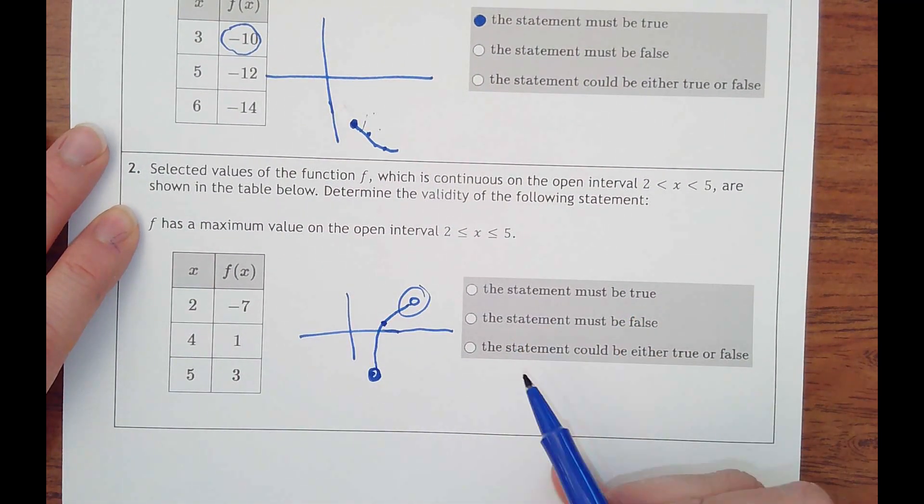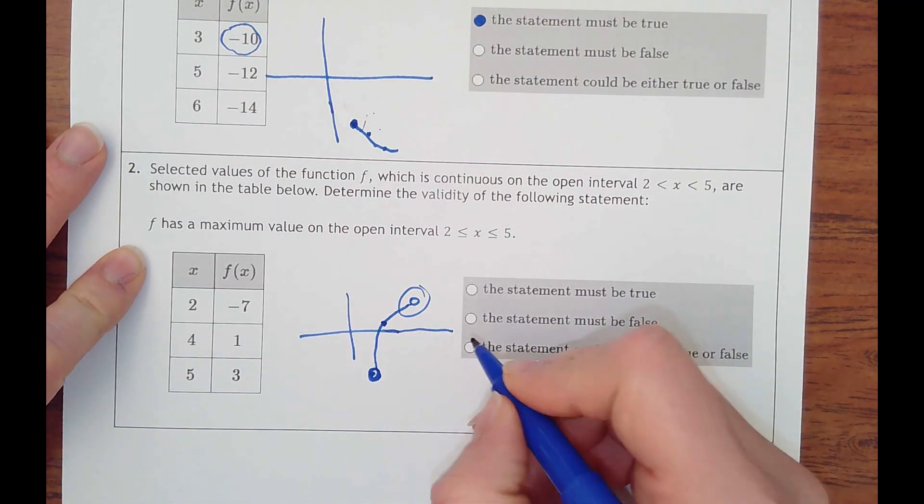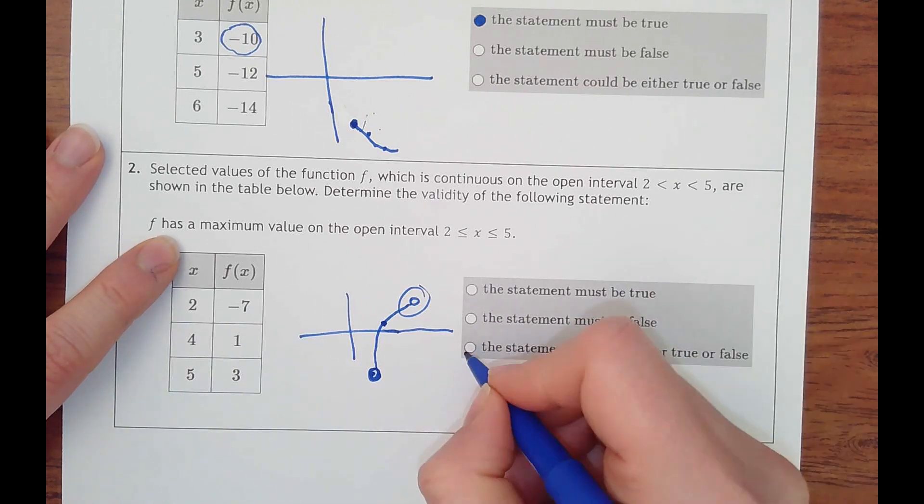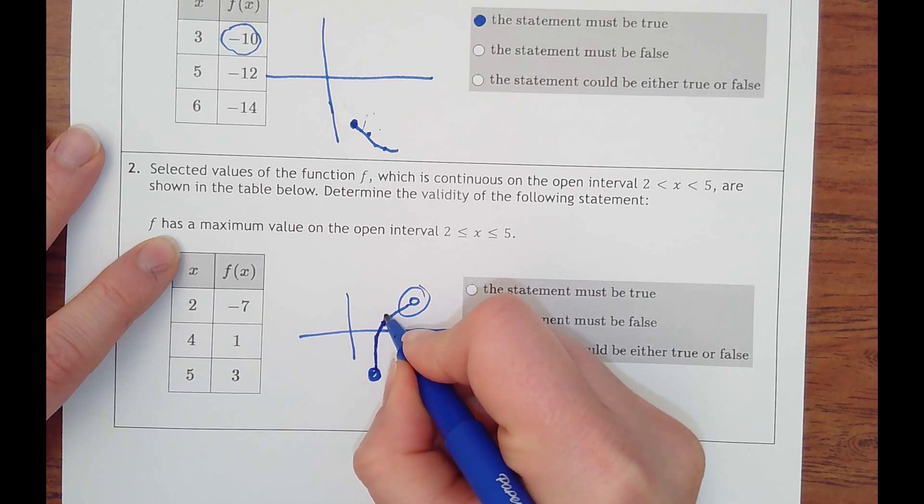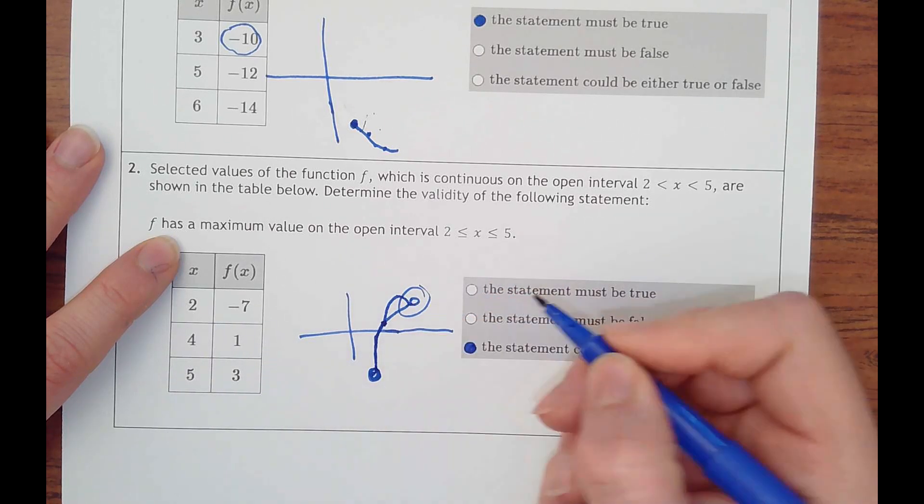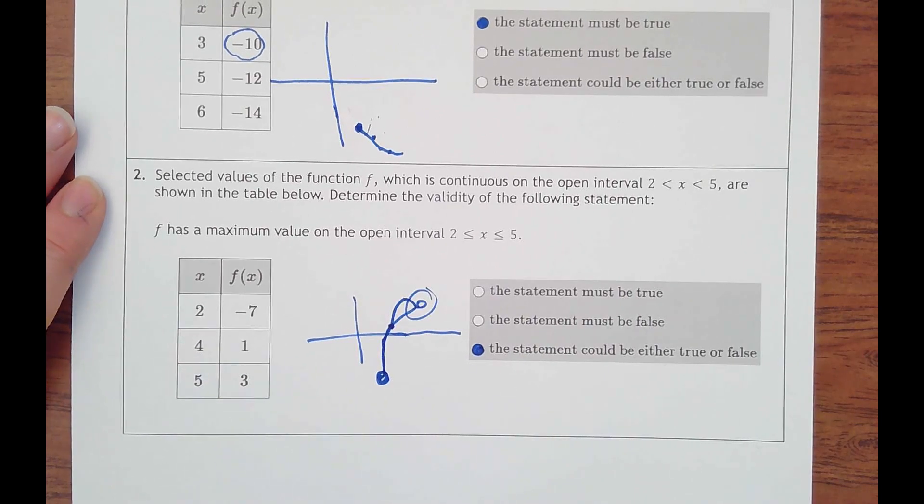So this one could be true or false. We don't know for sure that it's false. It could have something where it goes up and then down, but we just don't know for sure.